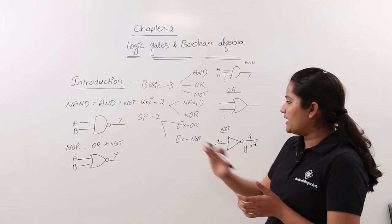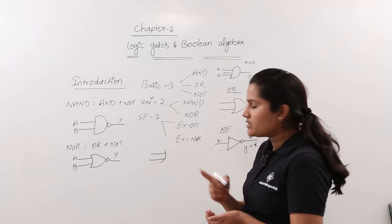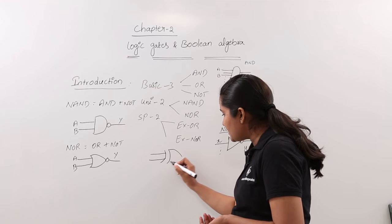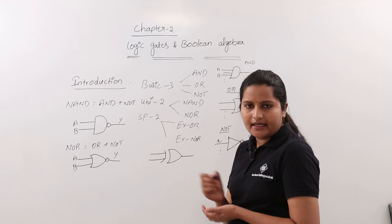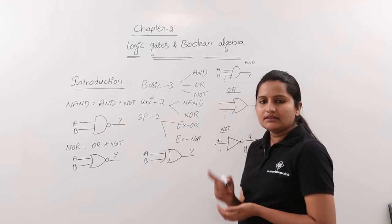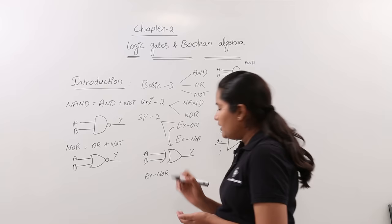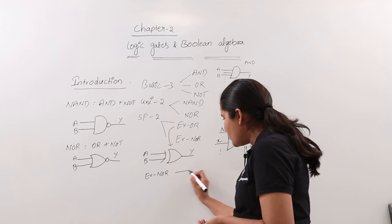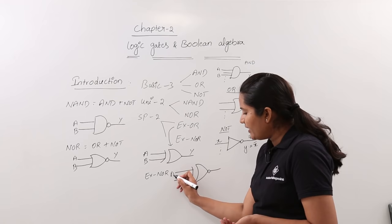Now we will look at the special gates XOR and XNOR. The XOR gate, also called the exclusive OR gate, is represented like an OR gate but with a curve in front to indicate the input lines. Here I have taken a two-input XOR gate — we may have an N-input XOR gate — with two inputs and one output. As XNOR is the complemented gate for XOR, the symbol for XNOR is obtained by adding a bubble at the end of the XOR gate symbol. This also has two inputs and one output.